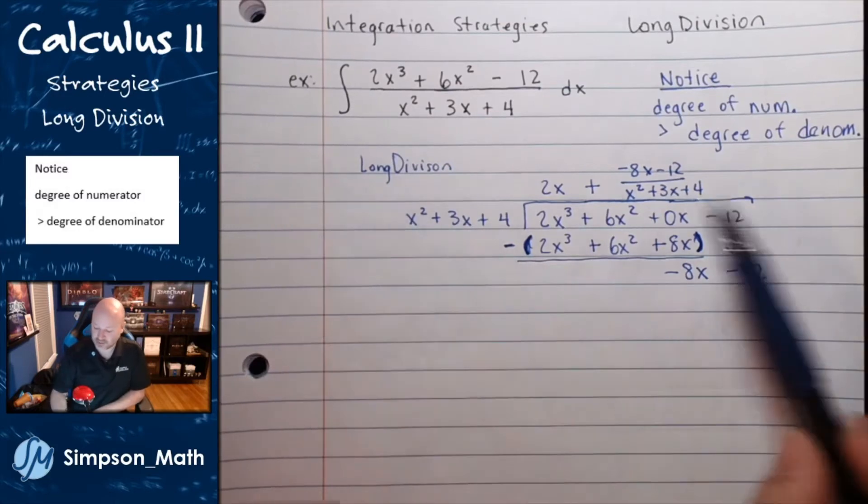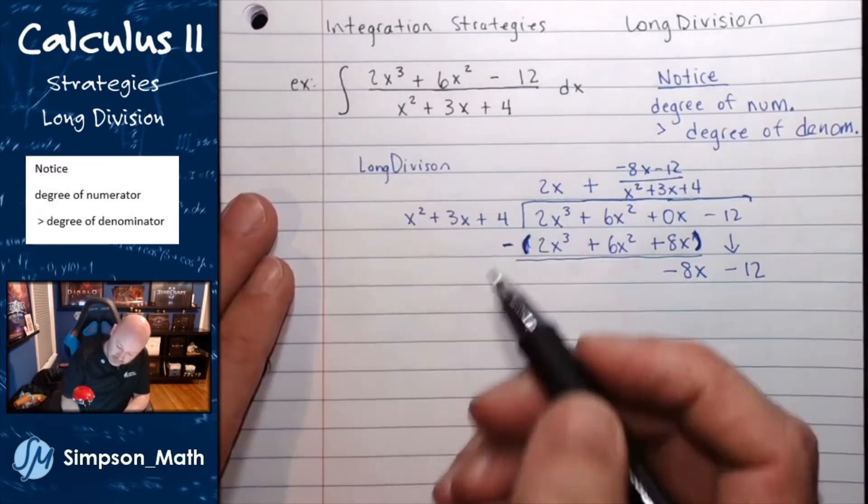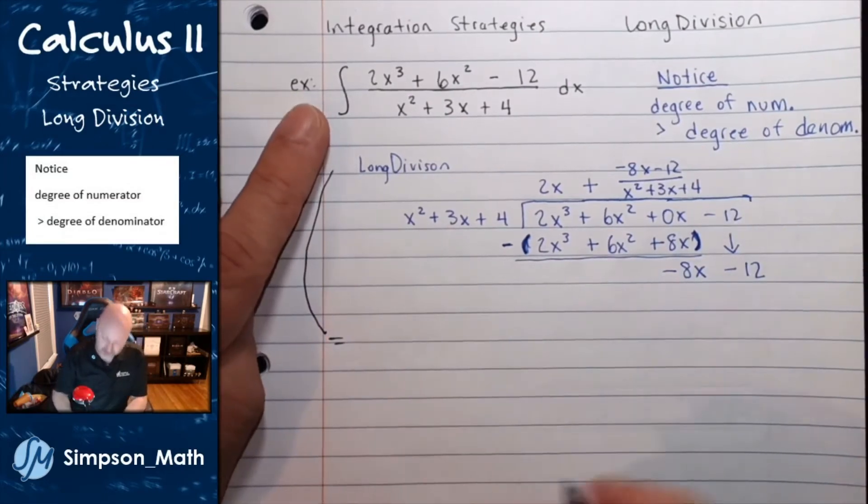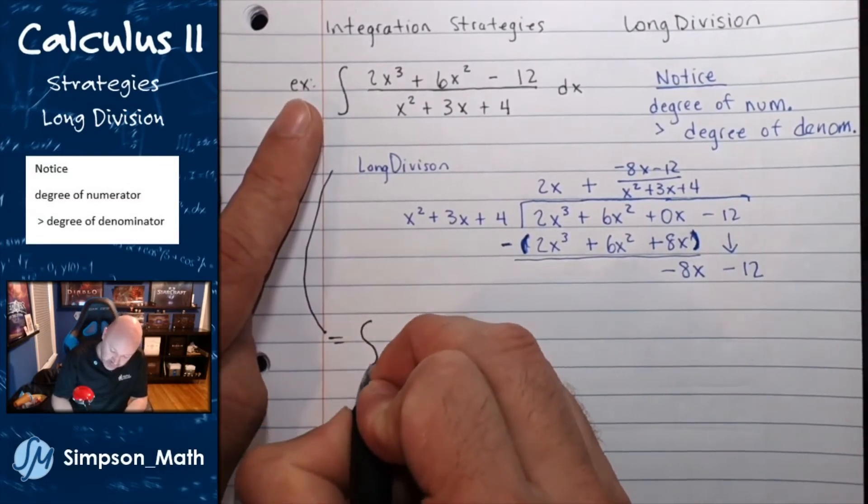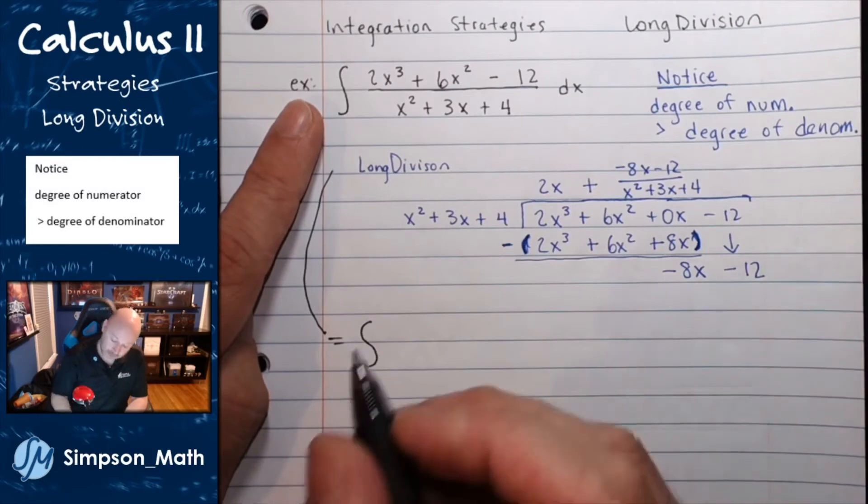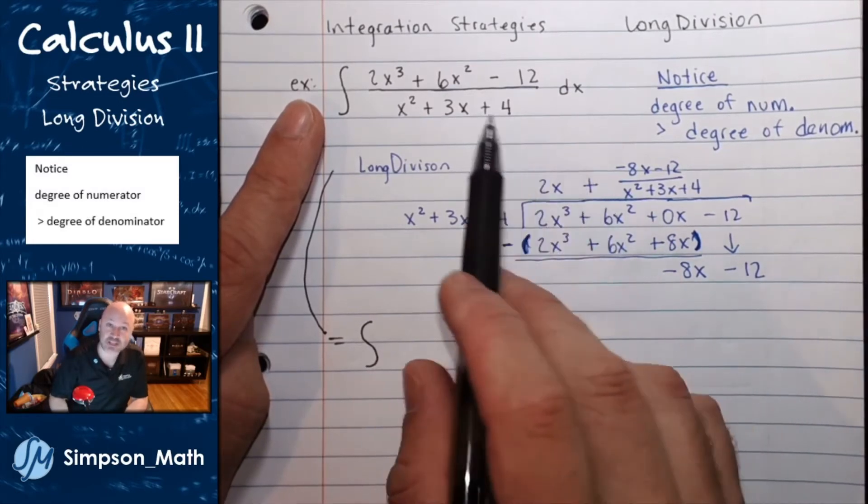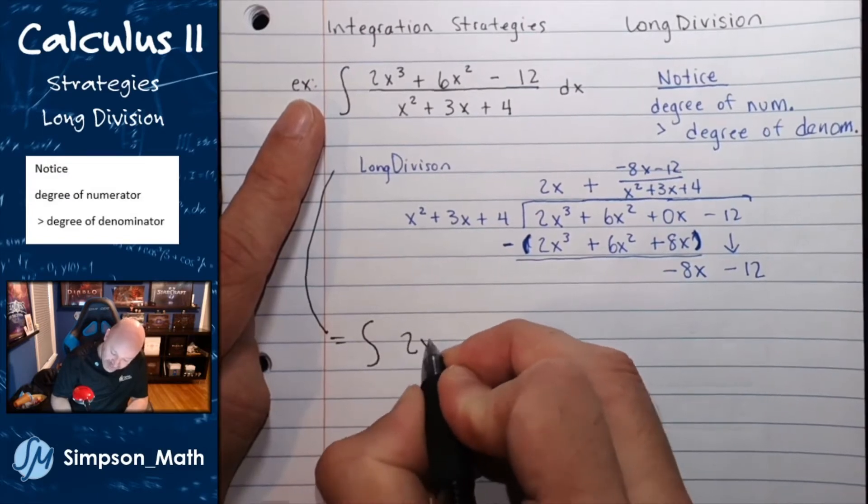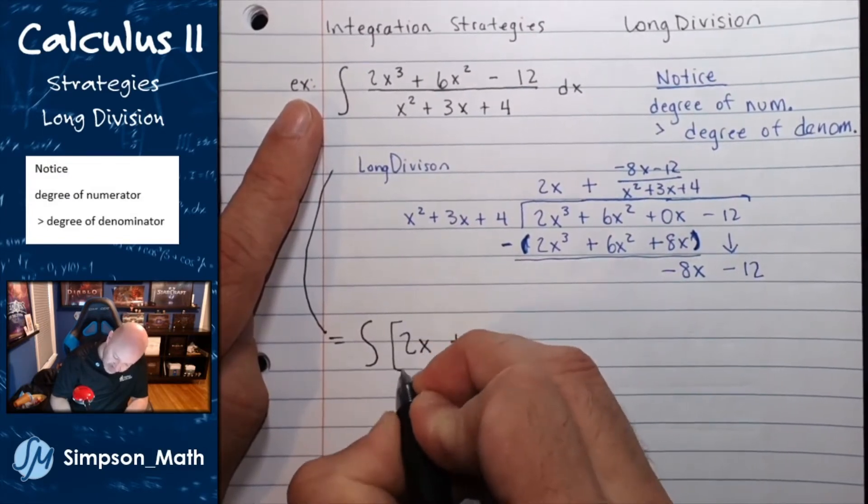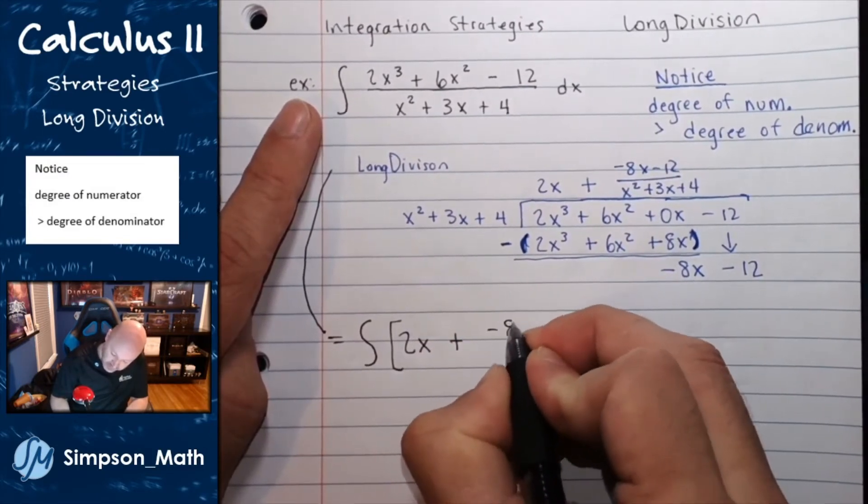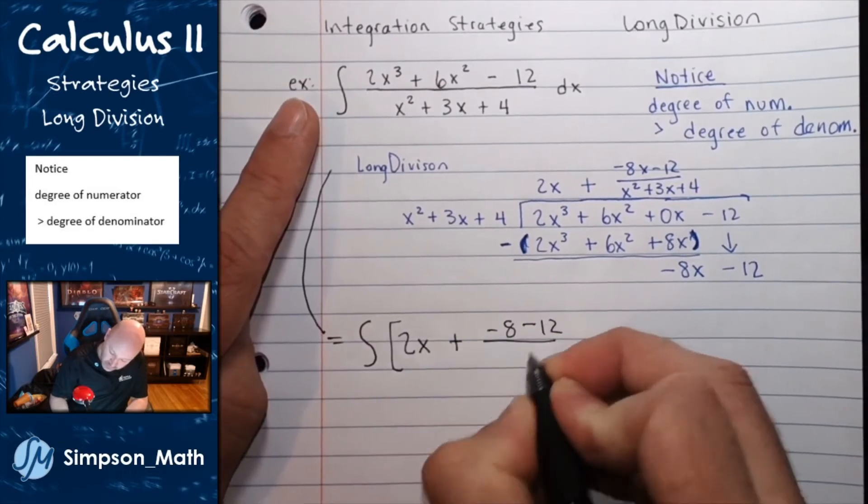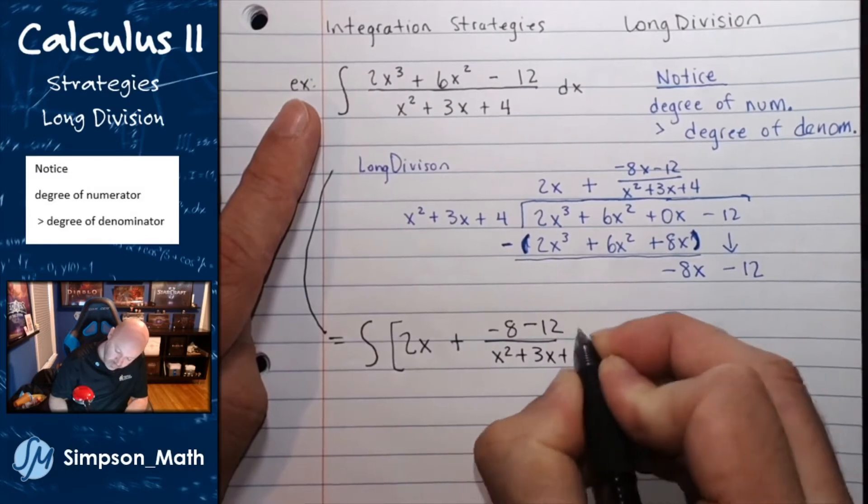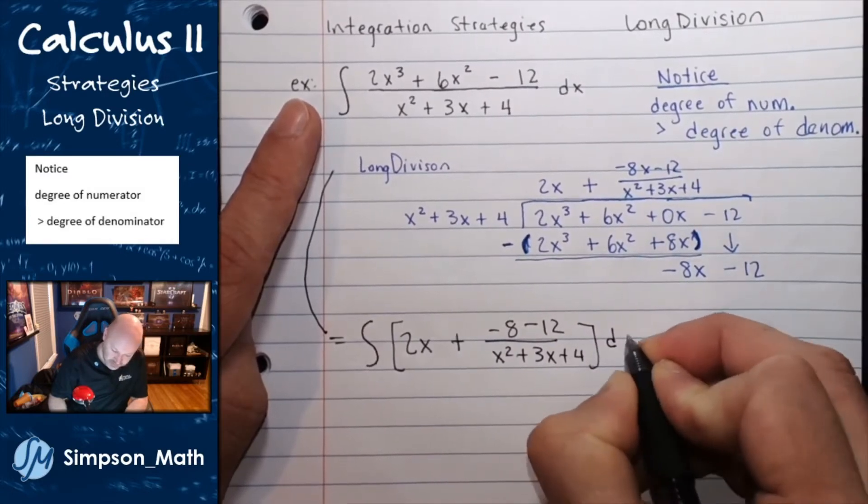This quotient is just this division. So, I can rewrite my integral. This integral is equal to another integral. But, this time, it's a sum instead of a division. I have the integral of 2x plus my remainder with respect to x.